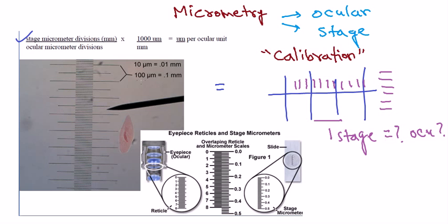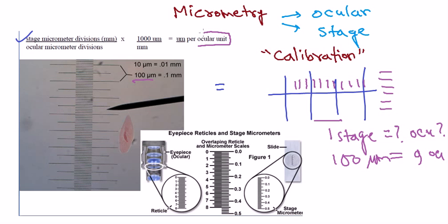Suppose you consider one particular stage division. In this picture, one whole stage division consists of 100 micrometers — the region between these two large lines scales 100 micrometers. In between this 100 micrometer stage division, you count how many ocular divisions there are: one, two, three, four, five, six, seven, eight, nine — nine oculars. So one stage division of 100 micrometers contains nine ocular divisions. Once you calculate this ocular calibration, we are ready to go.